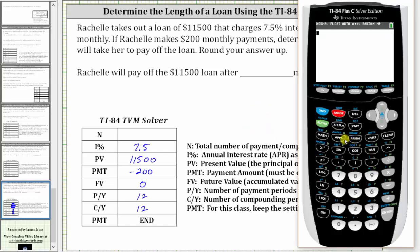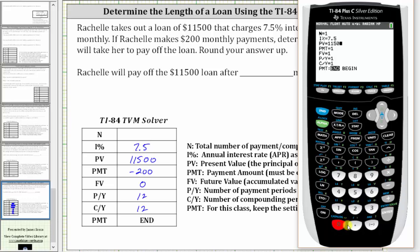From the home screen we press Apps, Enter, Enter. We are solving for N, so we come back to that field and press Enter. The interest rate is 7.5. The present value is positive $11,500. The payment amount is negative 200 because she is paying this amount each month. Future value is zero. The payments per year and compounds per year are both 12. Now we go back up to N and solve for N by pressing Alpha, Enter.